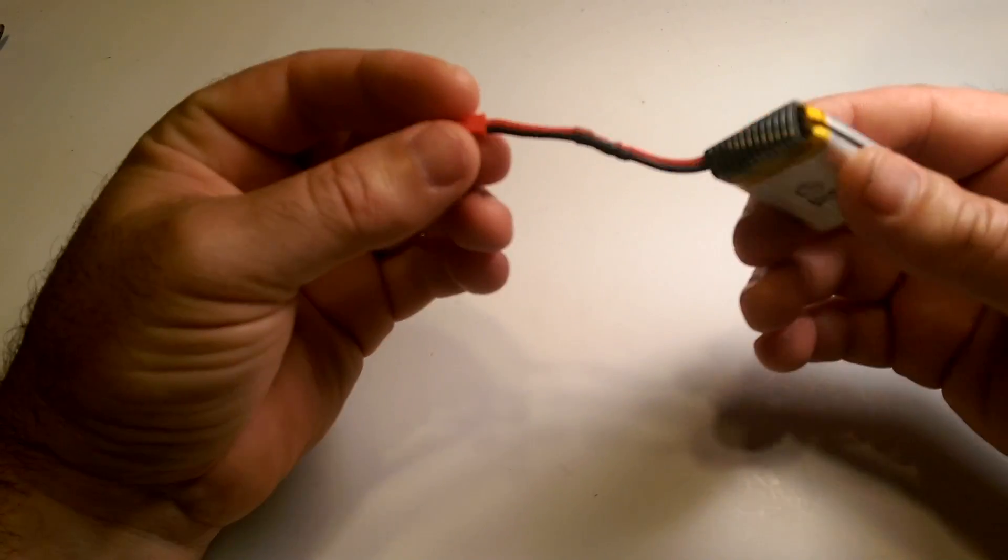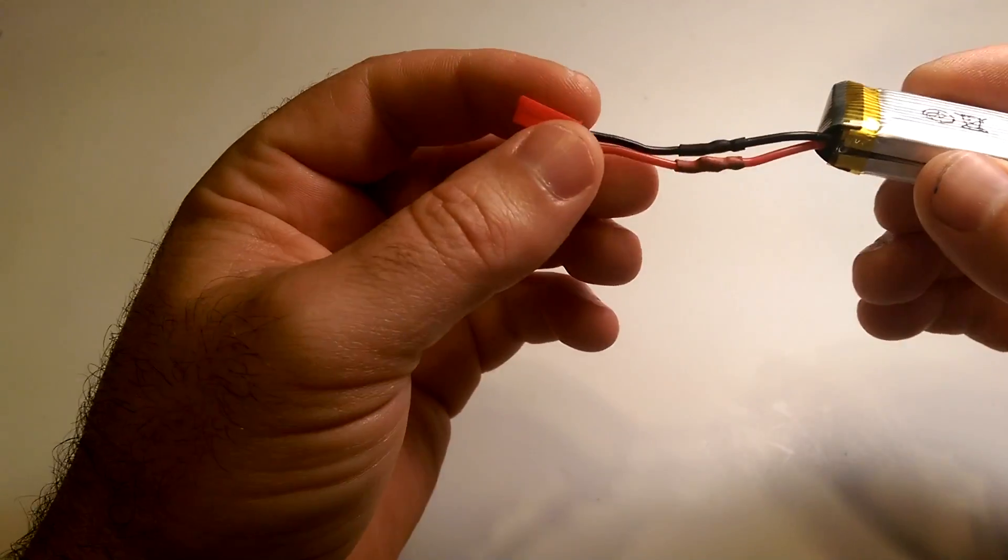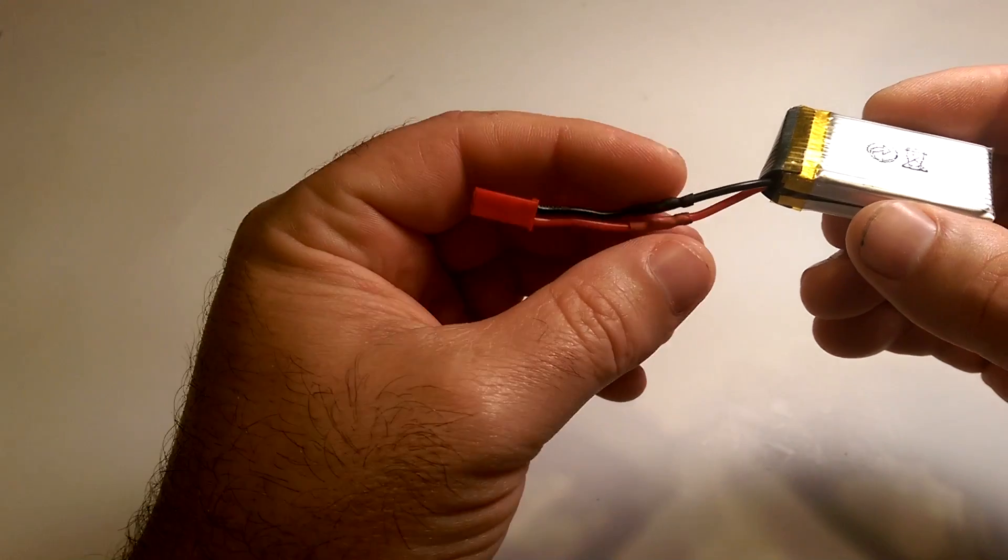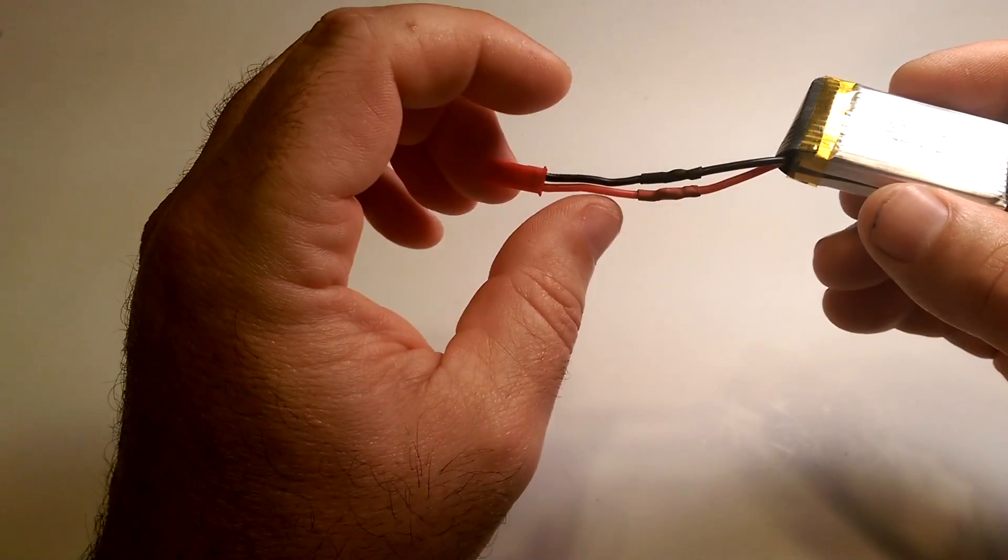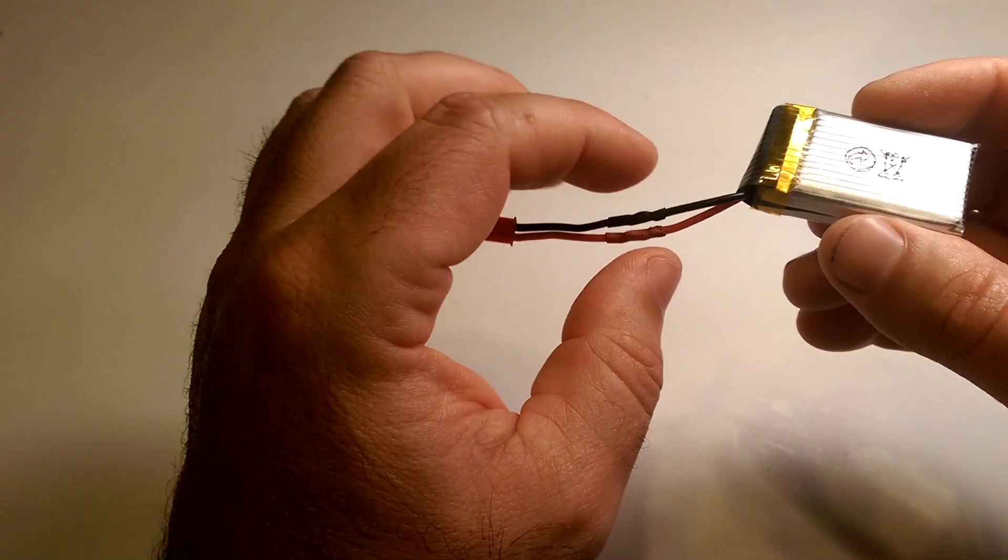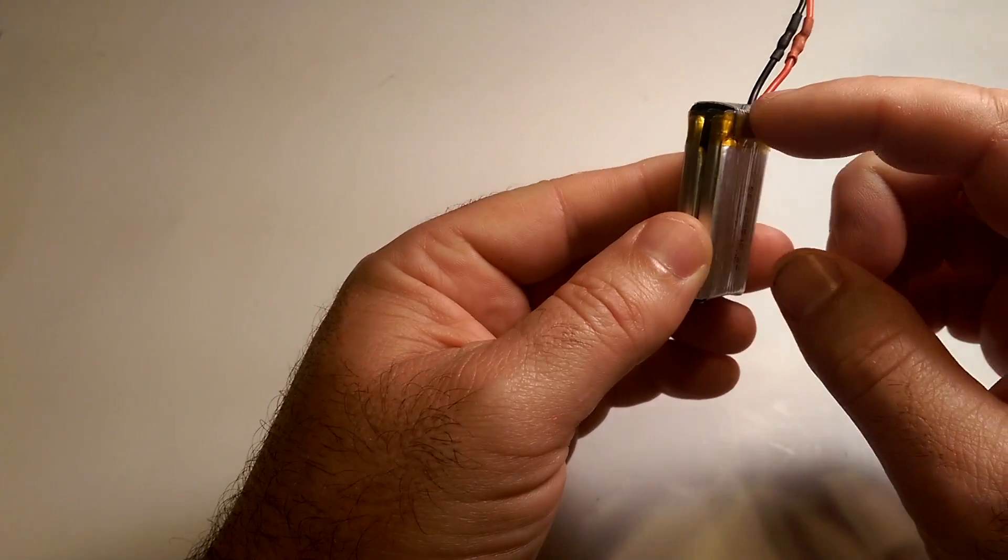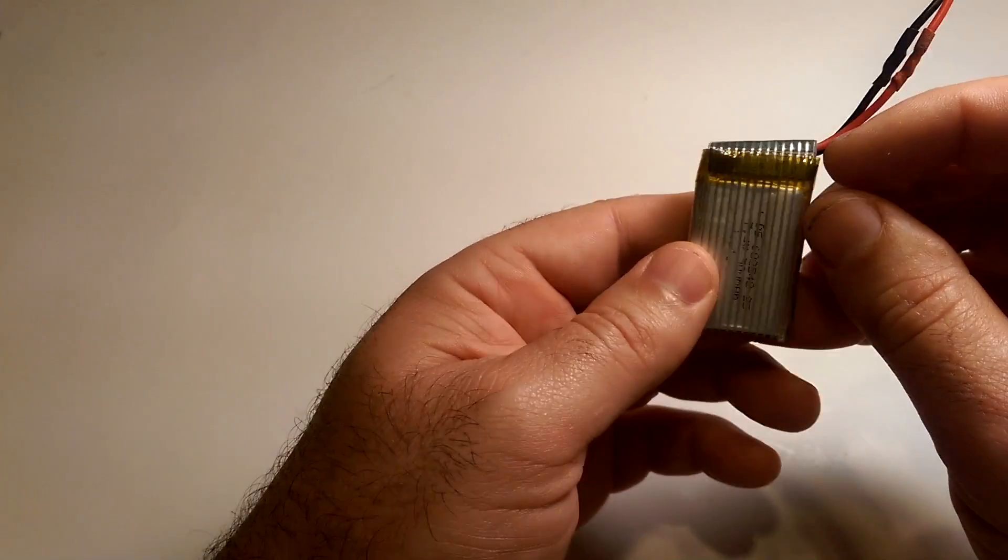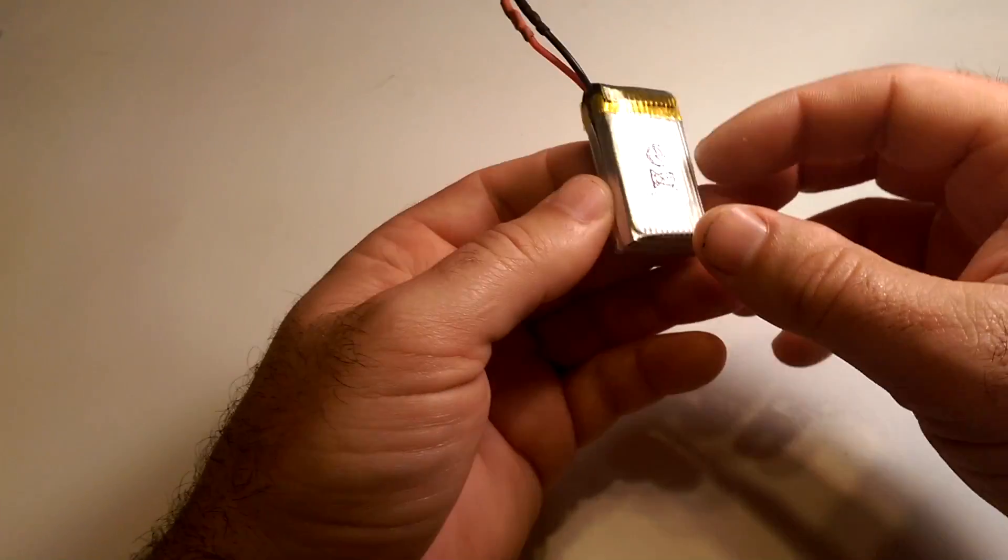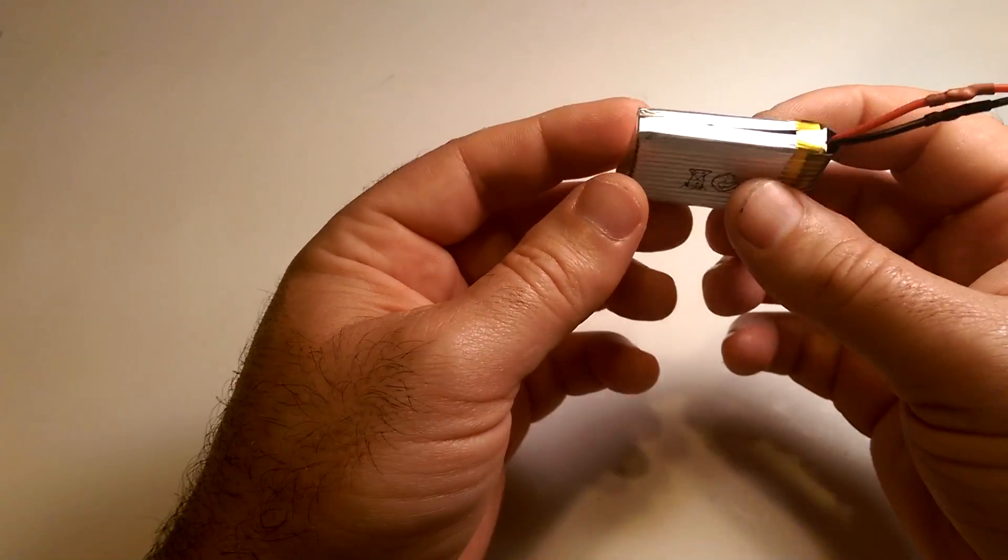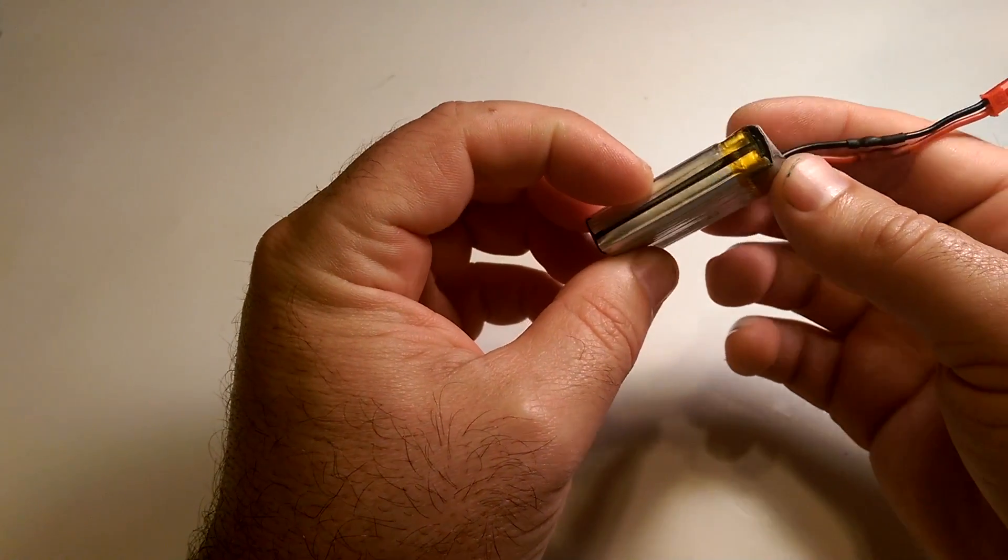If you did have a short, for example, the way I got this short was trying to put this JST connector on. I accidentally touched the positive and negative together very briefly. I had a spark and in these batteries there is a circuit board in between here. One of the chips will blow in the circuit board and it will break the circuit. You'll think your battery is completely gone, but as a matter of fact, it's just that that little chip is blown.